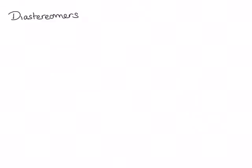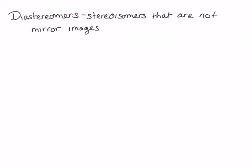The topic of this lecture will be diastereomers. Diastereomers are stereoisomers that are not mirror images. This is a very broad definition. You'll notice, because of the broadness of this definition, it includes a type of isomer we've already talked about: geometric isomers.